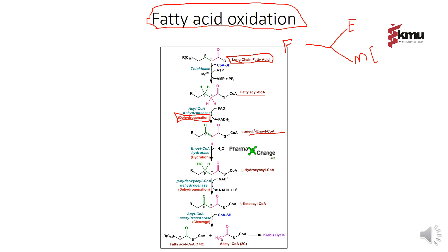In the third step, trans-enoyl-CoA is converted to beta-hydroxy acyl-CoA. The enzyme used in this step is enoyl-CoA hydratase. This step is called hydration, because water is added in this reaction. Any reaction in which water is required or added is called hydration.